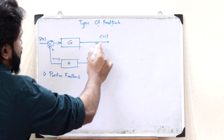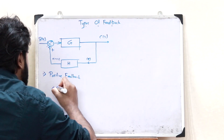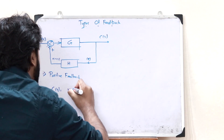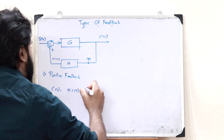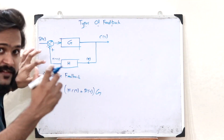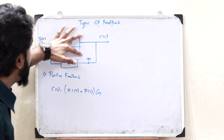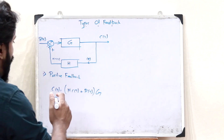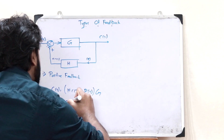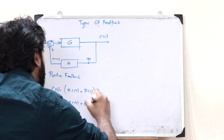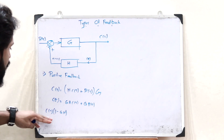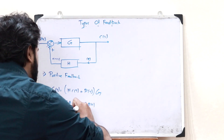So therefore, the output signal C of S is obtained as: C of S equals H into C of S plus R of S, the whole multiplied by G — because the sum of these two is passed through this control system having a gain of G. On expanding this, we get C of S equals GH into C of S plus G into R of S. Taking C of S onto this side, we get C of S into (1 minus GH) equals G into R of S.